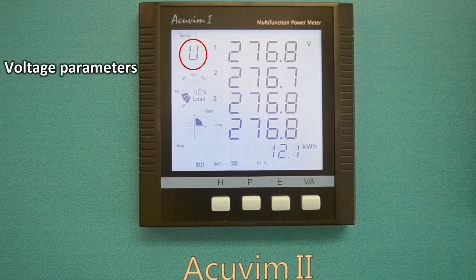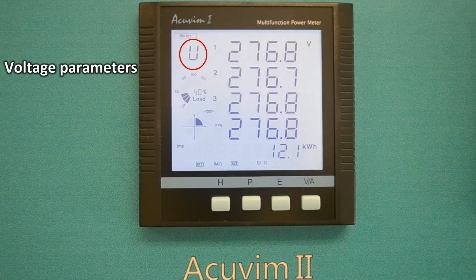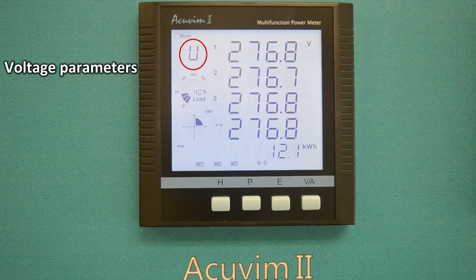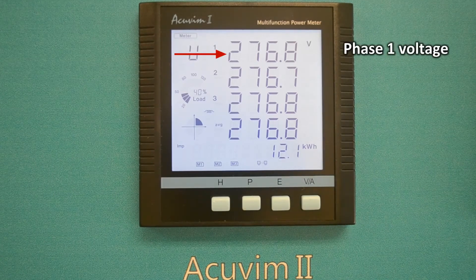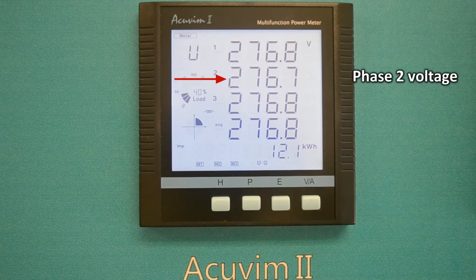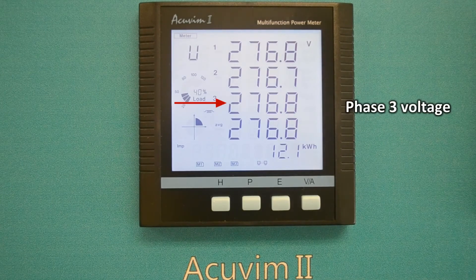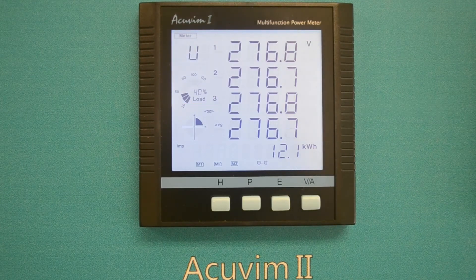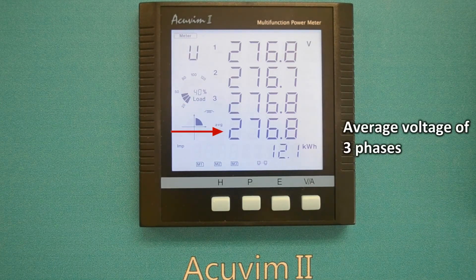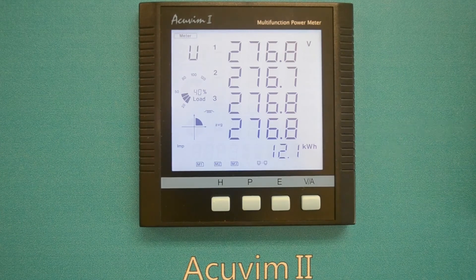The letter U in the upper left corner of the main display section means the meter is now displaying voltage parameters. Here is where phase 1, 2, and 3 voltages and the average voltage of the three phases are displayed.